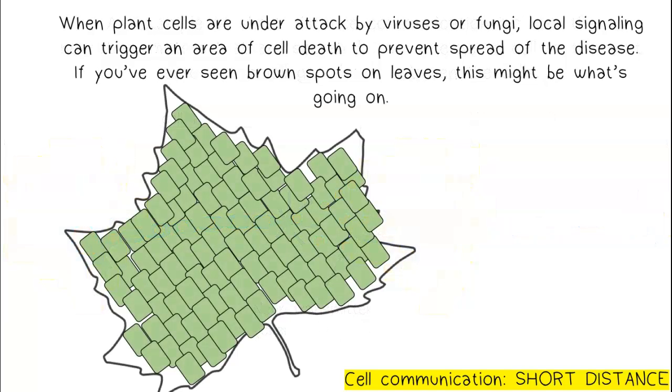When plant cells are under attack by viruses or fungi, local signaling can trigger an area of cell death to prevent spread of the disease. If you've ever seen brown spots on leaves, this might be what's going on.